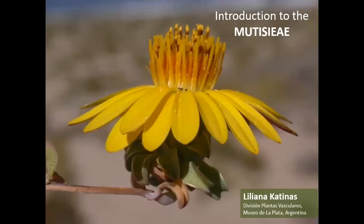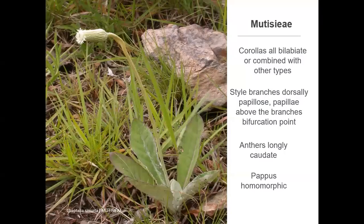Let's go now to another tribe of the subfamily Mutisioideae: the tribe Mutisieae. Some of the diagnostic features of Mutisieae are that the corollas could be all bilabiate in the capitulum, or combined with other types of corollas. The style branches are dorsally papillose and the papillae are distributed above the branch's bifurcation point. The anthers are longly caudate and the pappus is homomorphic.